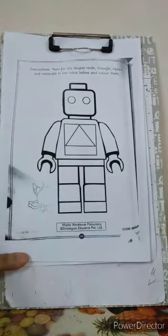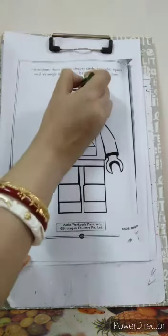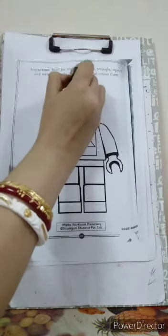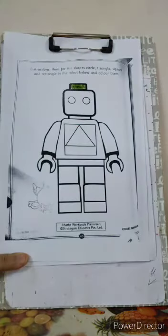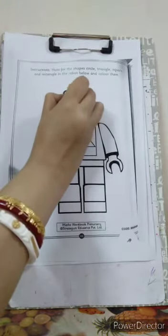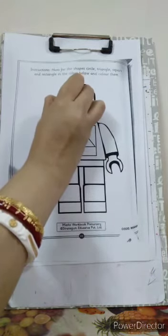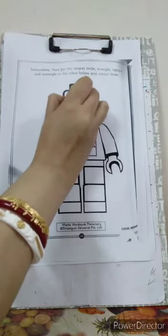So let us start coloring children. First of all, we will start from the top. Rectangle. Rectangle. Rectangle. Yes. Then we will color circles. Circles. Yes, we will color them. Circles.